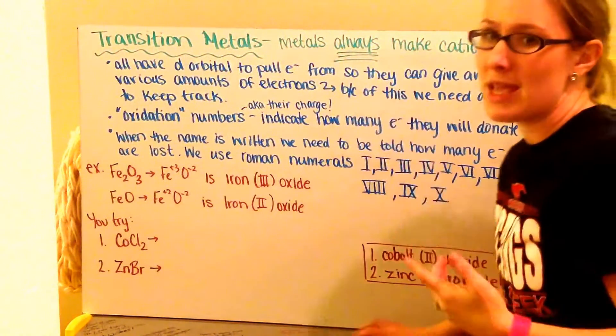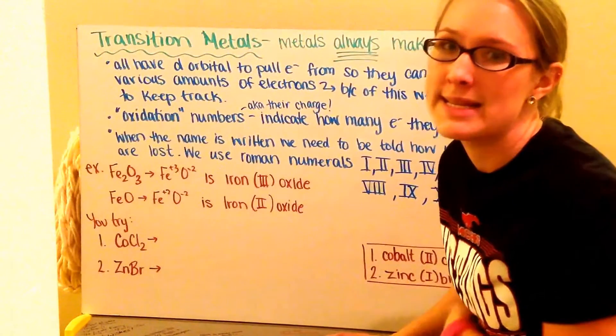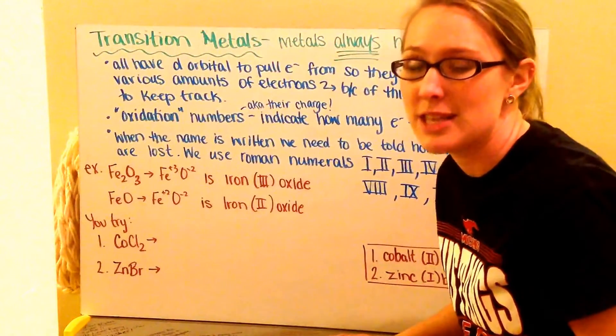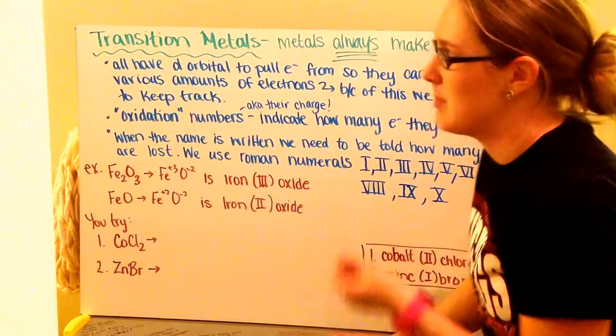So I can pull these electrons from that D orbital so they can give away various amounts of electrons. So because they can give away anywhere from 1 to 6 electrons, I need some way of knowing how many electrons it's giving away, depending on what it's being paired with.